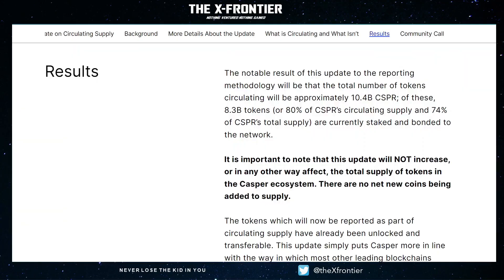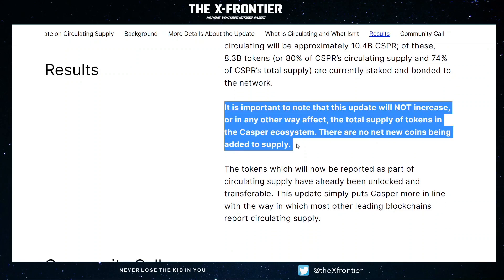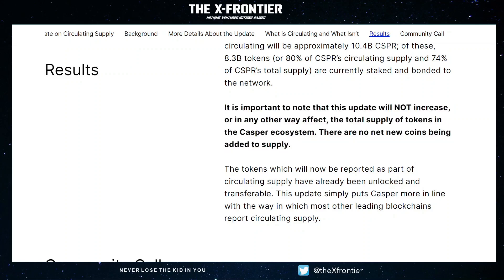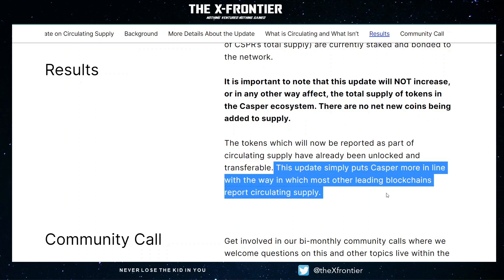Looking at the results, the change in methodology brings us to about 10.4 billion CSPR. 8.3 billion of these tokens are currently staked and bonded, equating to about 80% of Casper's circulating supply and 74% of Casper's total supply. At the time of recording we are sitting closer to 76-point-something percent being staked. To emphasize — this will not increase or in any way affect the total supply of tokens in the Casper ecosystem. No net new coins are being added. This update simply puts Casper more in line with the way in which most other leading blockchains report circulating supply.